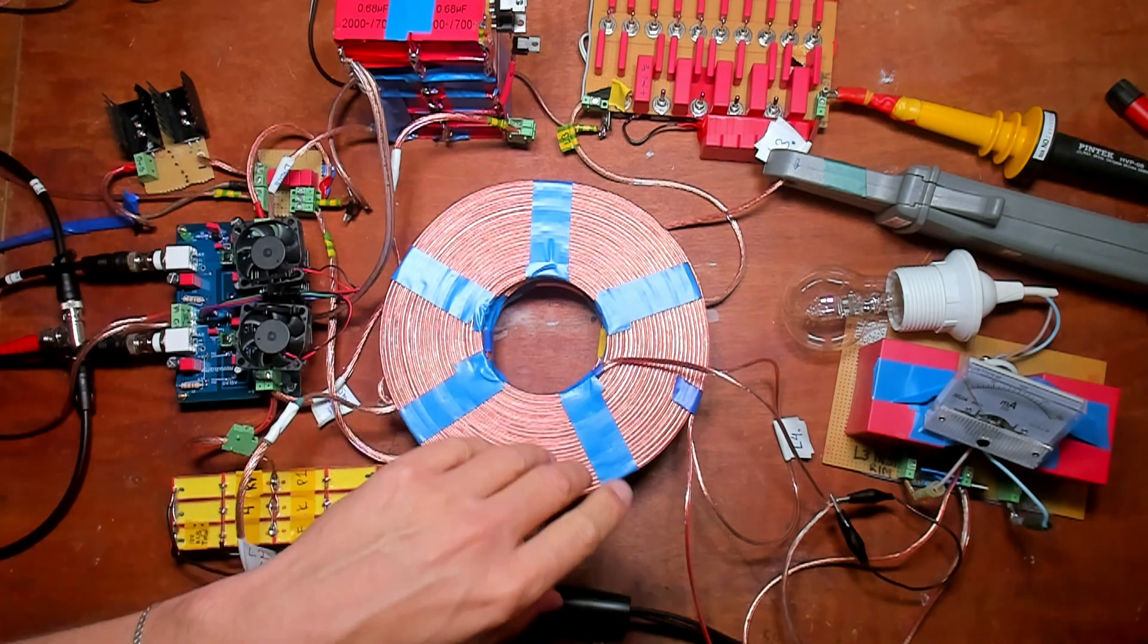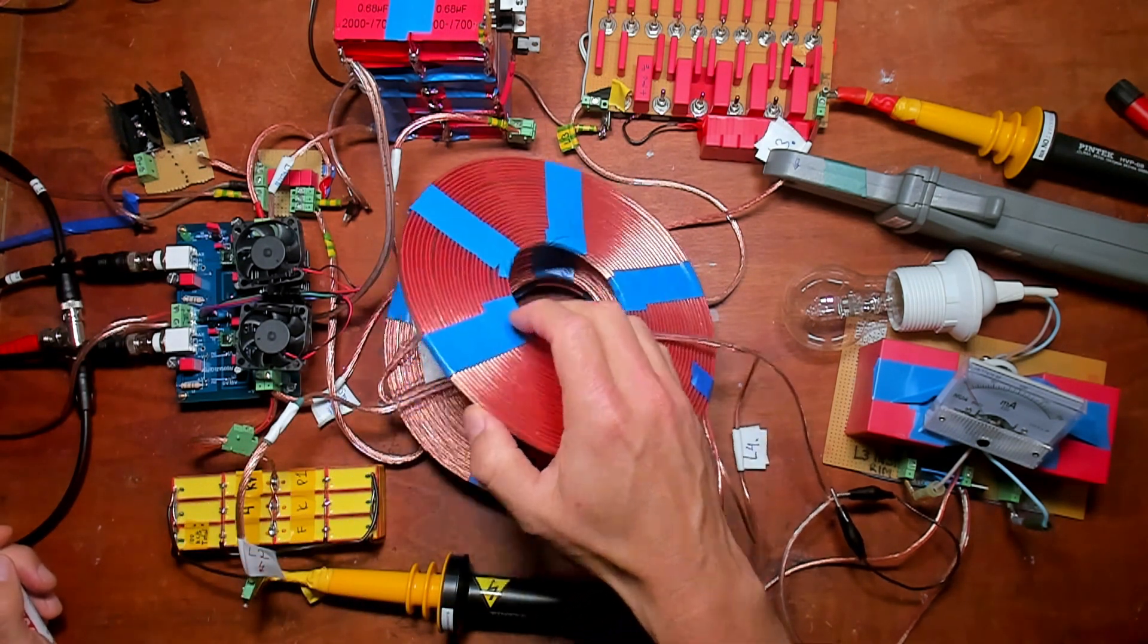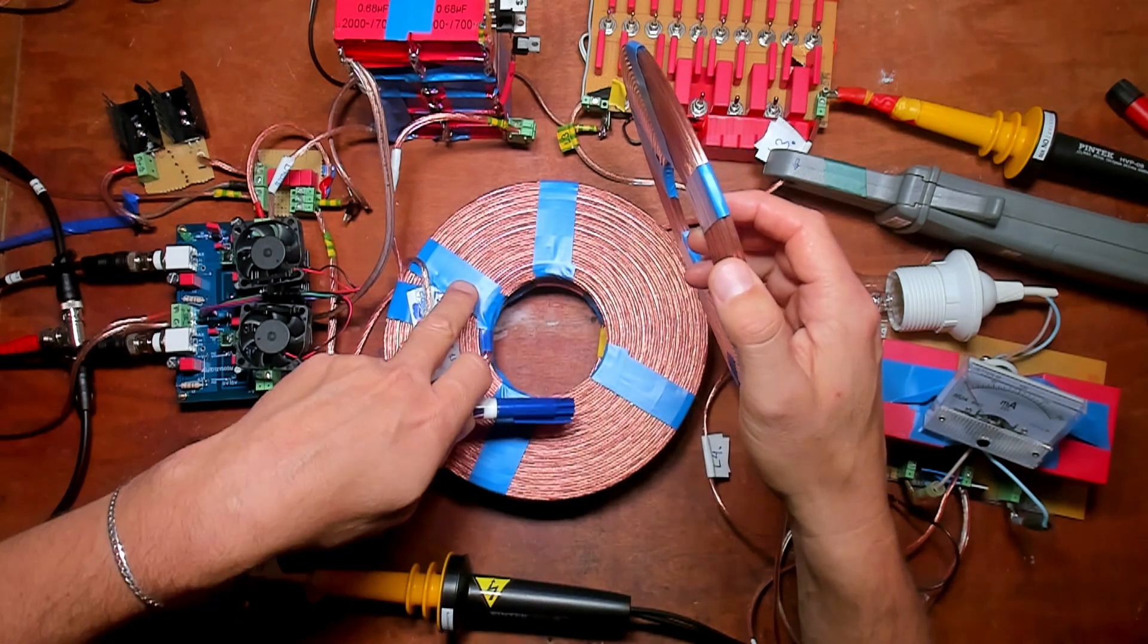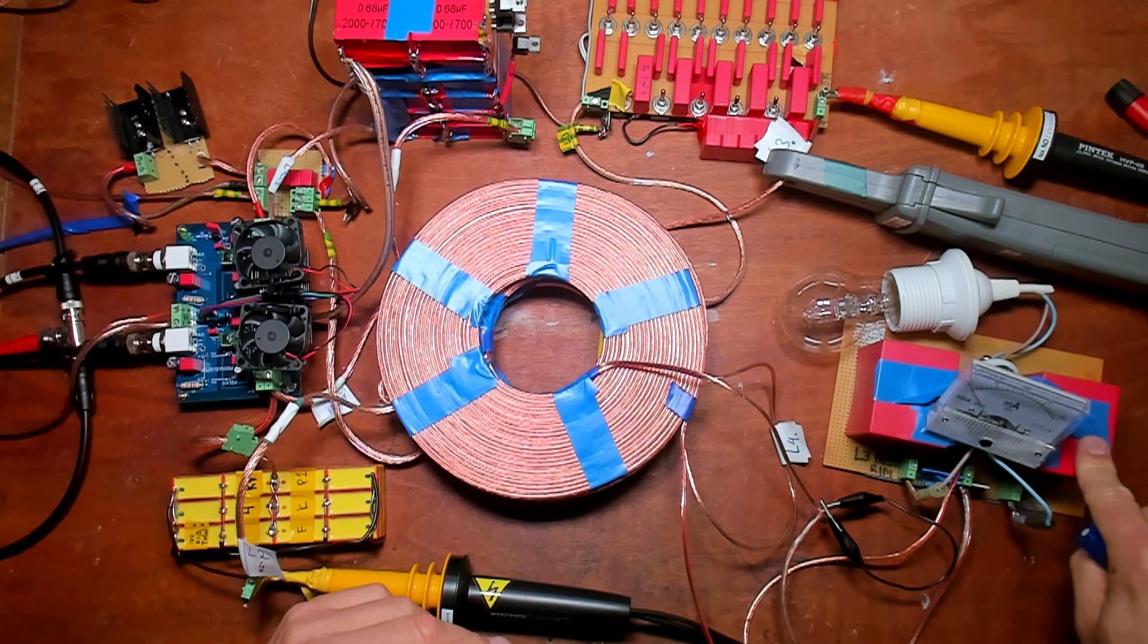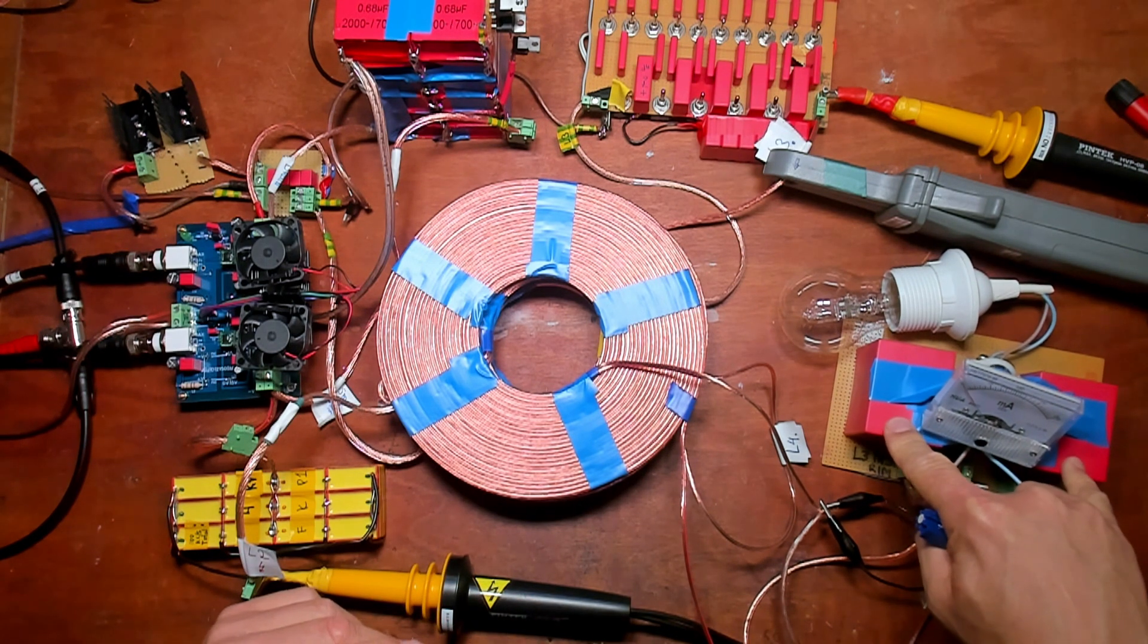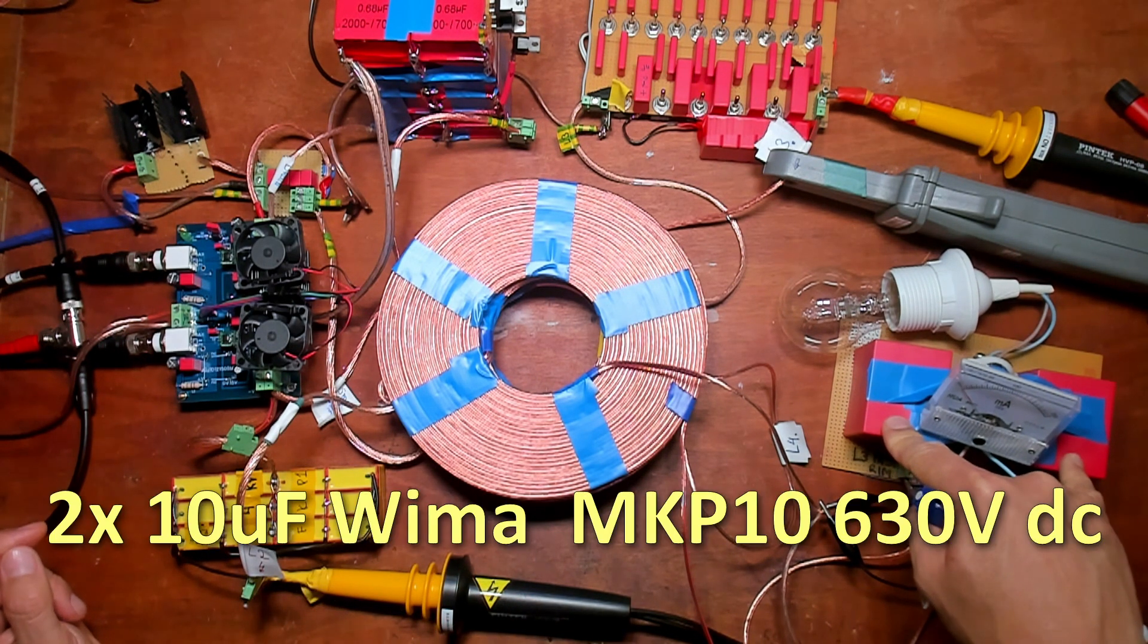I added a fourth coil, this one, to the L2. And this fourth coil is rectified to DC into a capacitor bank, very large. This is two times 10 microfarad.